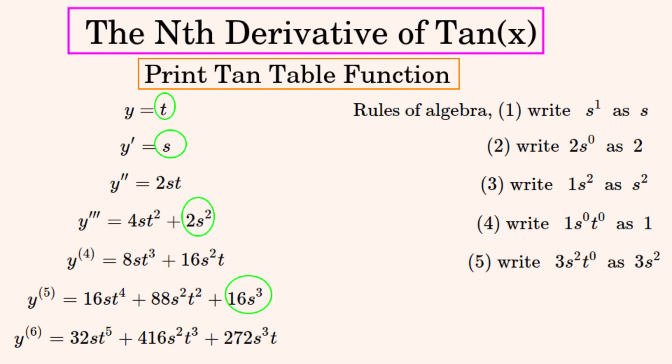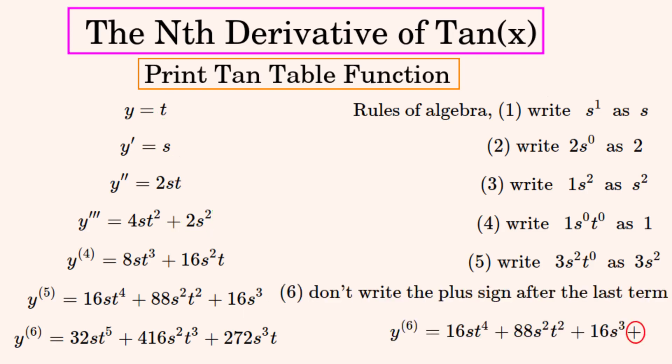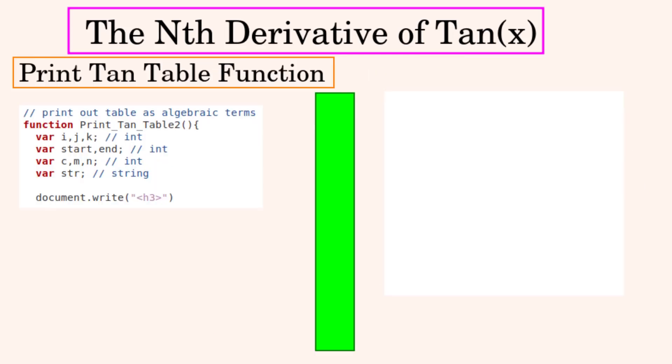The fifth rule is that we never write in a variable if it is raised to the power of 0 but we write in all of the other variables. Here are some examples. This rule is different enough to rule 2 to be mentioned. And the last rule is to not write the plus sign after the last term. Now to write some computer code to print out the table of tangent derivatives.